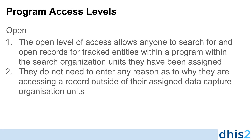We can provide a brief overview of what these different program access levels entail. The open level of access allows anyone to search for and open records for tracked entities within a program, within the search organization units that they have been assigned. What they can subsequently do within the program is dependent upon their user permissions and sharing settings within that particular program. They do not need to enter any reason as to why they are accessing a record outside of their assigned data capture organization units.